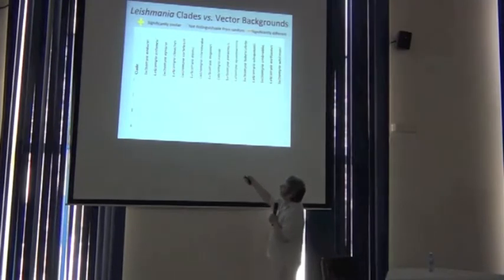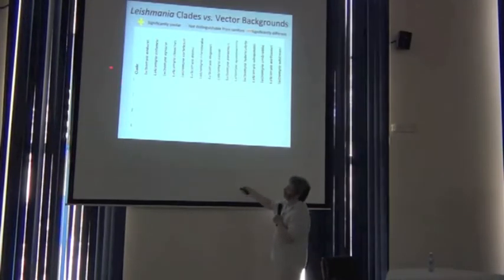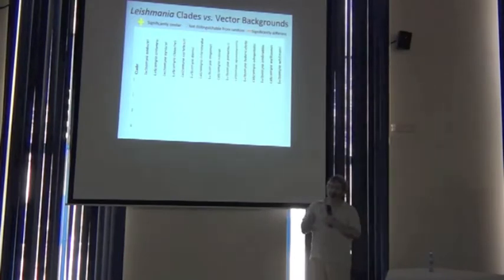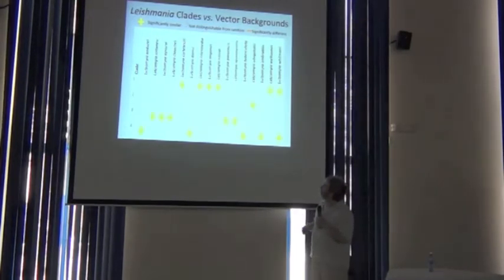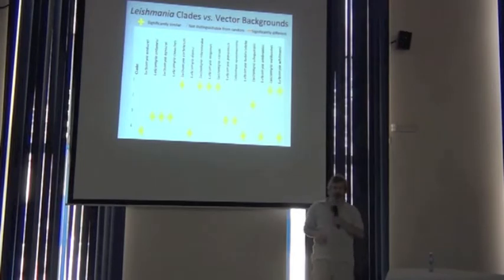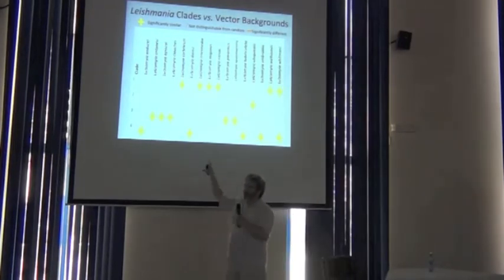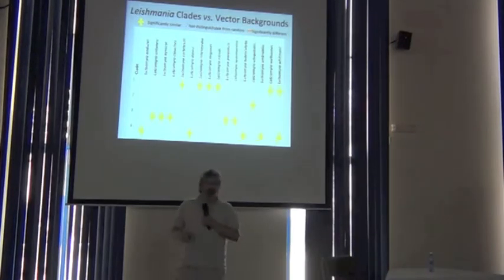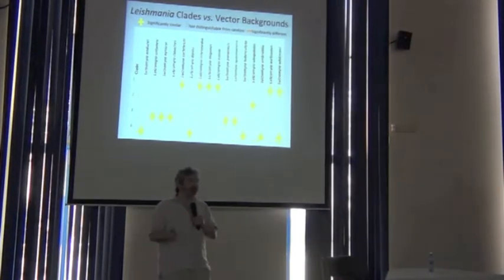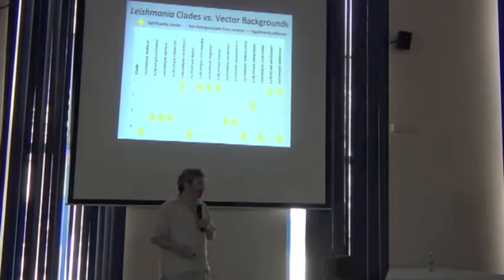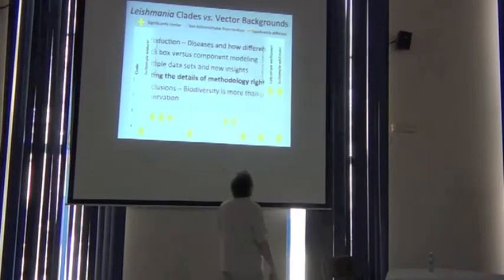I'm going to link vectors and pathogen clades. Not all of these vectors transmit all of these clades, so I'm only going to show you a symbol where there is a linkage. And guess what? They're all significantly similar. So here's a disease system where the pathogen appears to essentially obey the ecology of its vector. That looks still pretty preliminary.